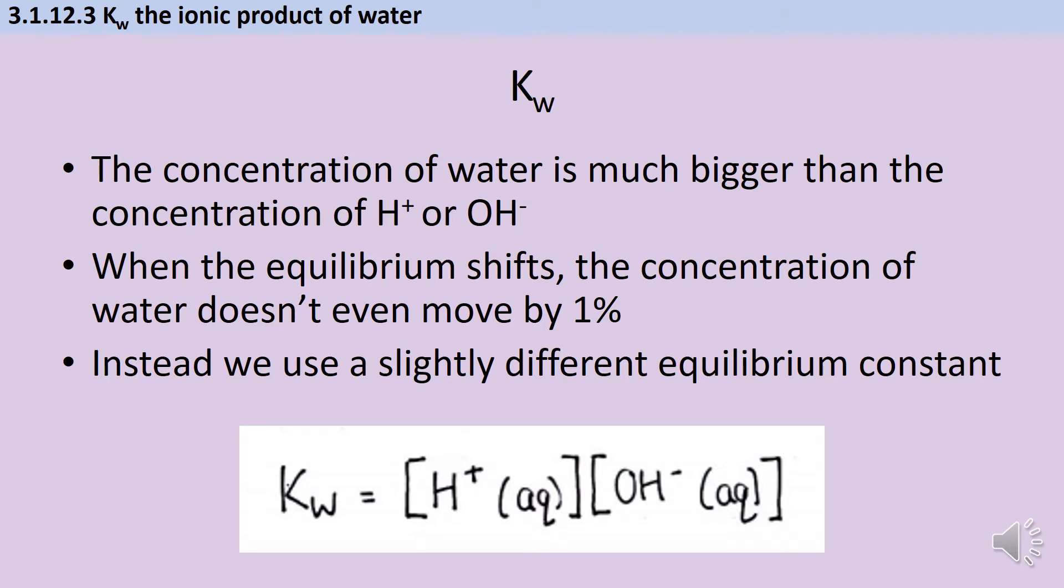When the equilibrium shifts because the temperature changes, the concentration of water doesn't even move by 1%. There's basically no point in including it in the expression, but we can't just leave it out and still call it KC. So we use a different equilibrium expression called KW, or the ionic product of water, and this is just the same but we've omitted the water.